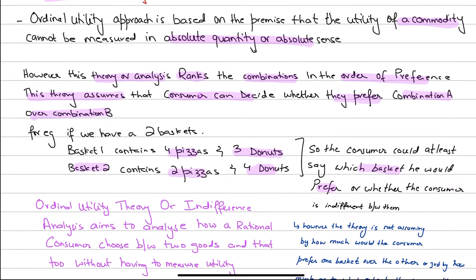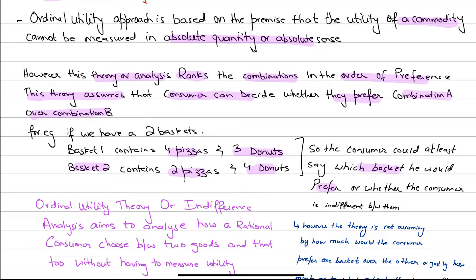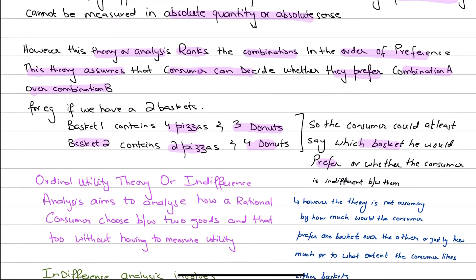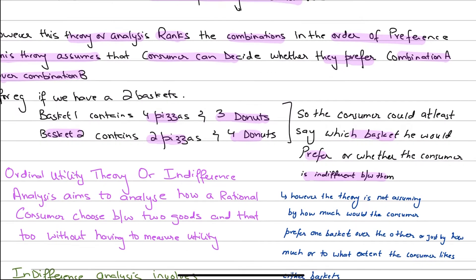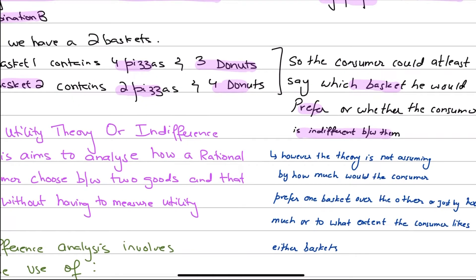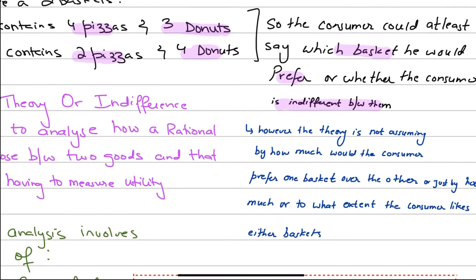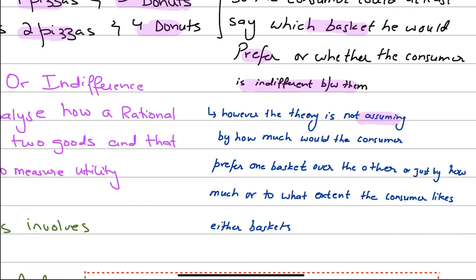The consumer can say 'I prefer basket one' or 'I prefer basket two,' or they might be indifferent between them. However, this theory does not assume that we can actually measure that preference — it does not assume by how much the consumer prefers one basket over the other. The magnitude of the preference is something the consumer cannot tell us.